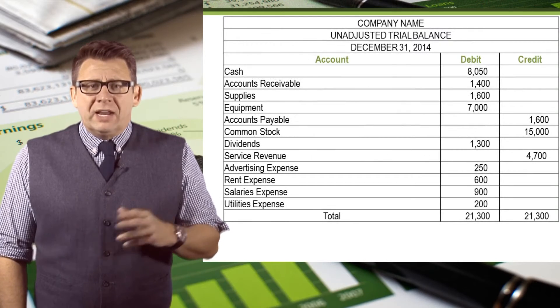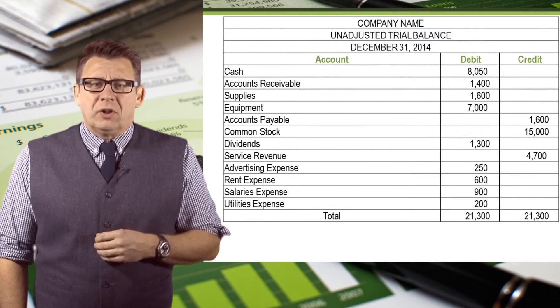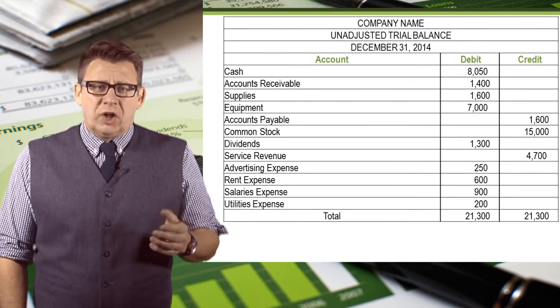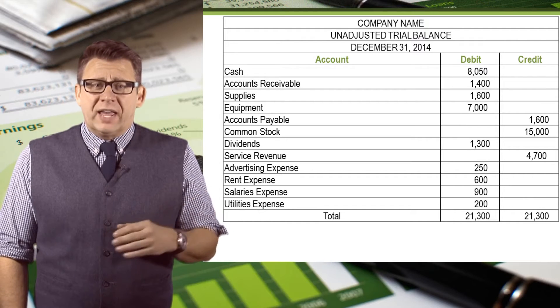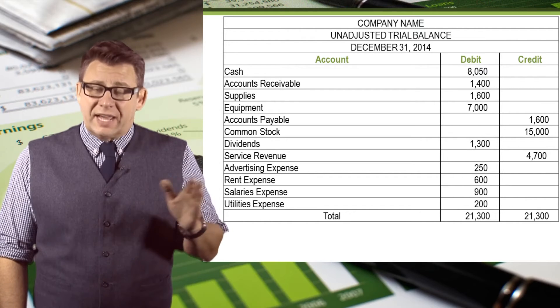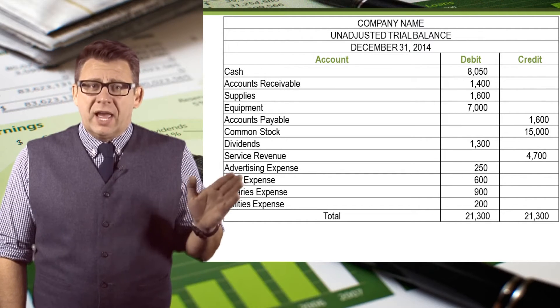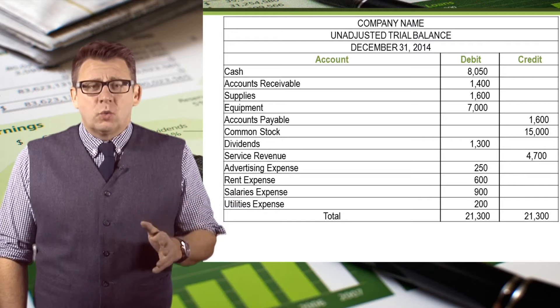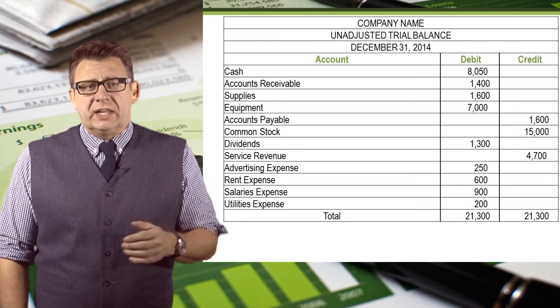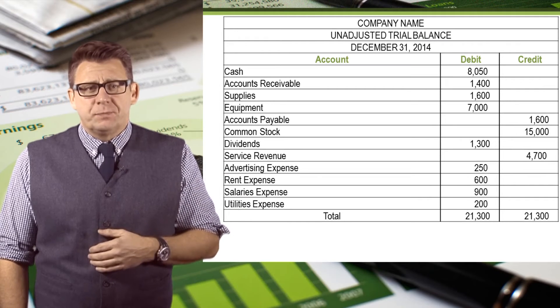Now here's an example of a trial balance. Notice the account order is assets, liabilities, equity, revenues, and finally expenses.